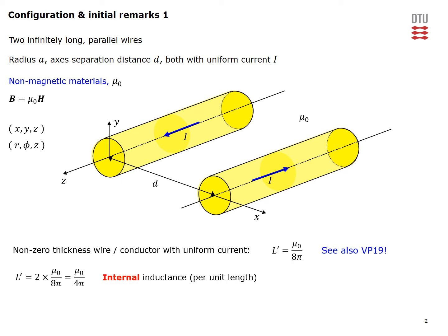From video problem 19 we can recall that if we have a wire or conductor that has non-zero thickness and carries a uniform current, its internal inductance will always be given by the expression here.